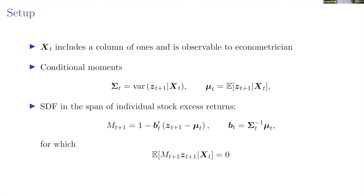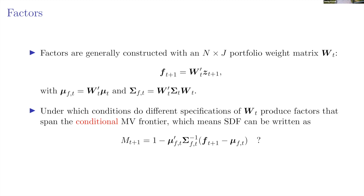The only problem is we don't observe sigma-t and mu-t. Those are very difficult to estimate — we'd need to estimate every month the full 10,000-by-10,000 variance-covariance matrix and all the conditional means. So instead, in asset pricing we simplify and work with factors. I use a matrix W that converts N stocks into J portfolios — that's how we denote the factors.